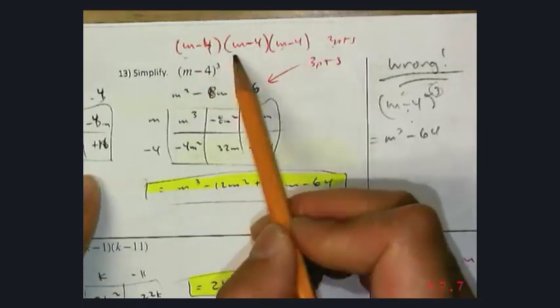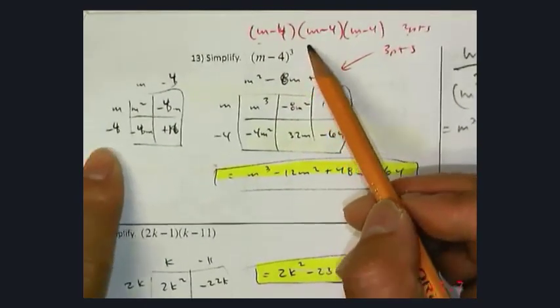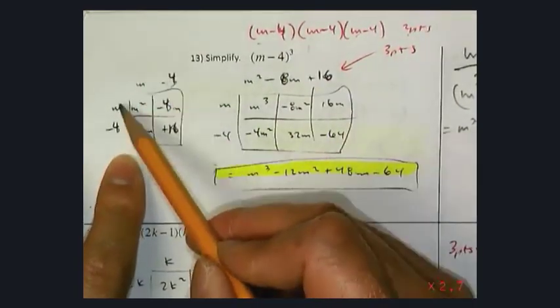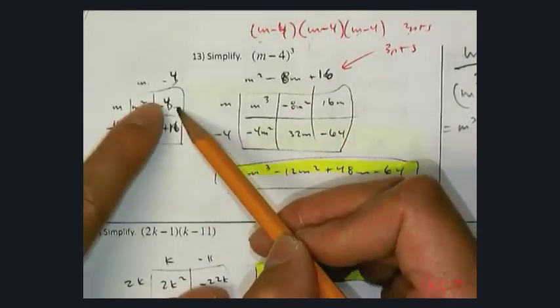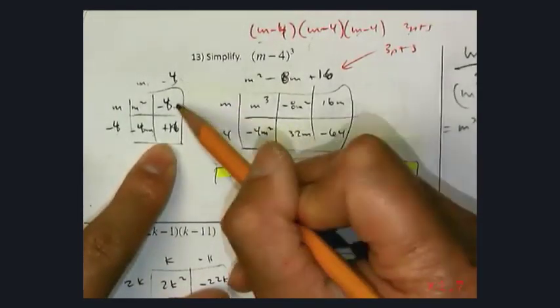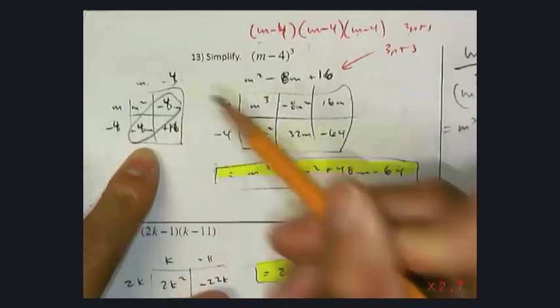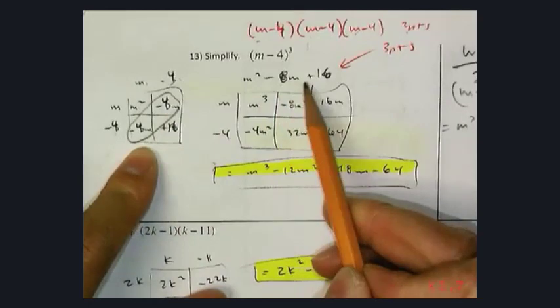If you multiply the first two binomials, you can use FOIL or the box method, (m - 4) and (m - 4). Multiply gives you m², negative 4m, negative 4m, positive 16. You combine like terms here, and that gives you m² - 8m + 16.